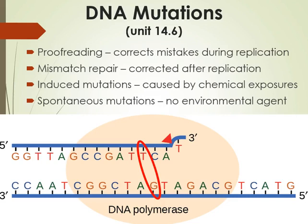With replication happening so frequently in so many cells throughout the body, mistakes happen. When mistakes happen, we call them mutations. There are checkpoints within the cell cycle that check for mistakes. We have proofreading that checks for mistakes and corrects them before the cell divides so those mistakes aren't passed on to the daughter cell. You can see here that thymine and guanine were matched up — that's incorrect, and that base pair needs to be corrected. So proofreading and mismatch repair happen: we detect the problem and correct it right then and there.